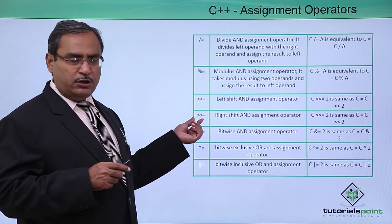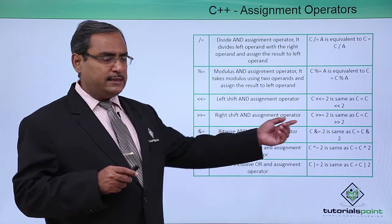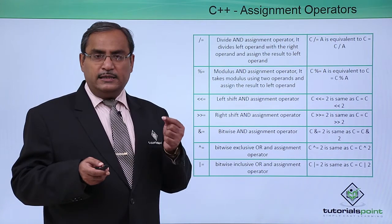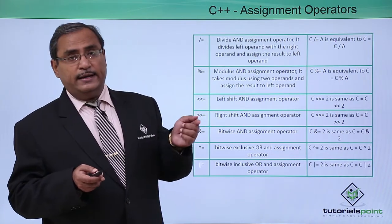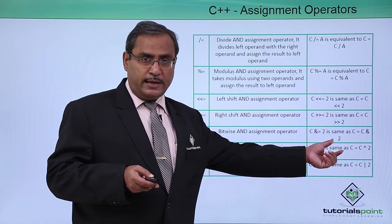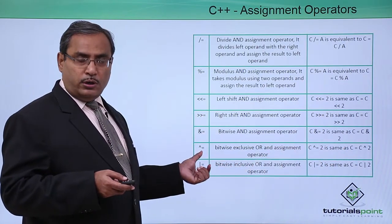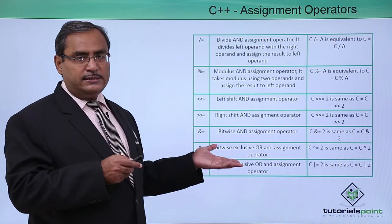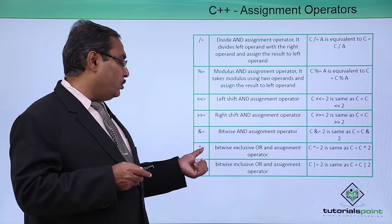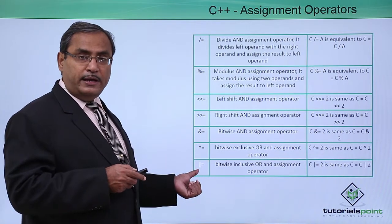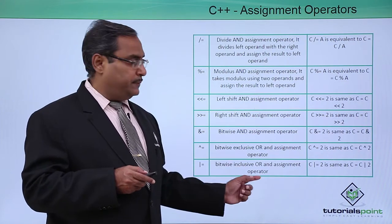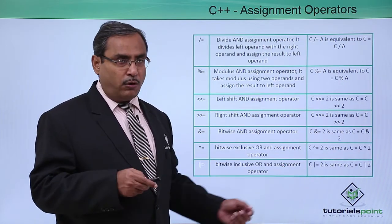There is also right-shift-equal-to with its explanation and example. We have ampersand-equal-to, which performs a bitwise AND operation. Then XOR-equal-to, using the caret symbol — we had a discussion on bitwise operations in our earlier videos. Finally, there is OR-equal-to, with its respective description and example for you to follow.